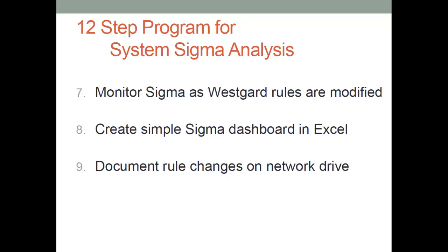So we created a sigma dashboard — it's not a single point. We monitored sigma on this dashboard by taking sigmas and putting them in Excel, doing a month-by-month chart to see how sigma changed for each method. We documented rule changes when we used the sigma to go to the op specs chart and develop WestGuard rules. We did this by site across our ten sites and documented changes on a network drive, system-managing our enterprise with the WestGuard method.